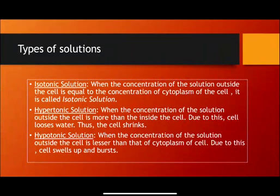Now we will see three types of solutions: isotonic, hypertonic, and hypotonic. Isotonic solution is when the concentration of the solution outside the cell and inside the cytoplasm of the cell is the same. In an isotonic solution, no change will occur in the cell.